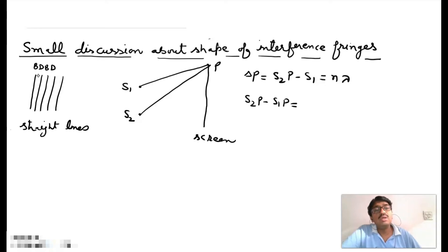And if this path difference S2P minus S1P represents the minimum intensity then it becomes equal to (2n+1) lambda by 2. If n for a particular n,